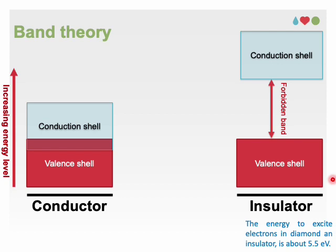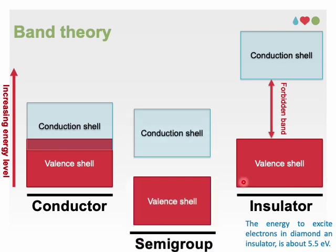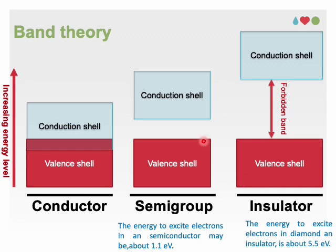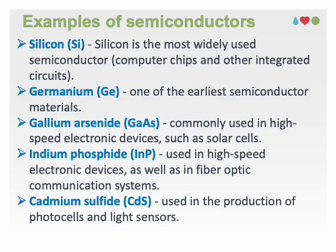In semiconductors, the band gap is smaller than insulators, allowing some electrons to move to the conduction band, resulting in moderate conductivity. An electron from the valence band can be excited to reach the conduction band if semiconductor takes at least 1.1 electron volts of energy to create a conducting current in the material.